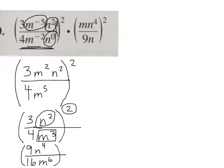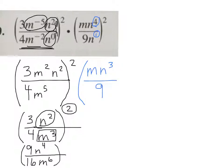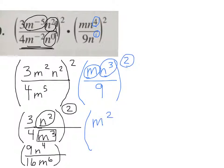Now let's simplify the second one. On the second one, there's nothing inside the parentheses to simplify — all the exponents are positive. But I can do n to the 4th divided by n. That n there — what's the exponent understood to be? 1, to the first. And so I've got m. And then 4 minus 1 is 3, so I'll put n to the 3rd over 9. The exponent on top is bigger than the exponent on bottom, so n to the 3rd goes on top. And it's all being squared. So now let's square it: m squared, and n cubed being squared is a power to a power — you multiply — so that's n to the 6th.